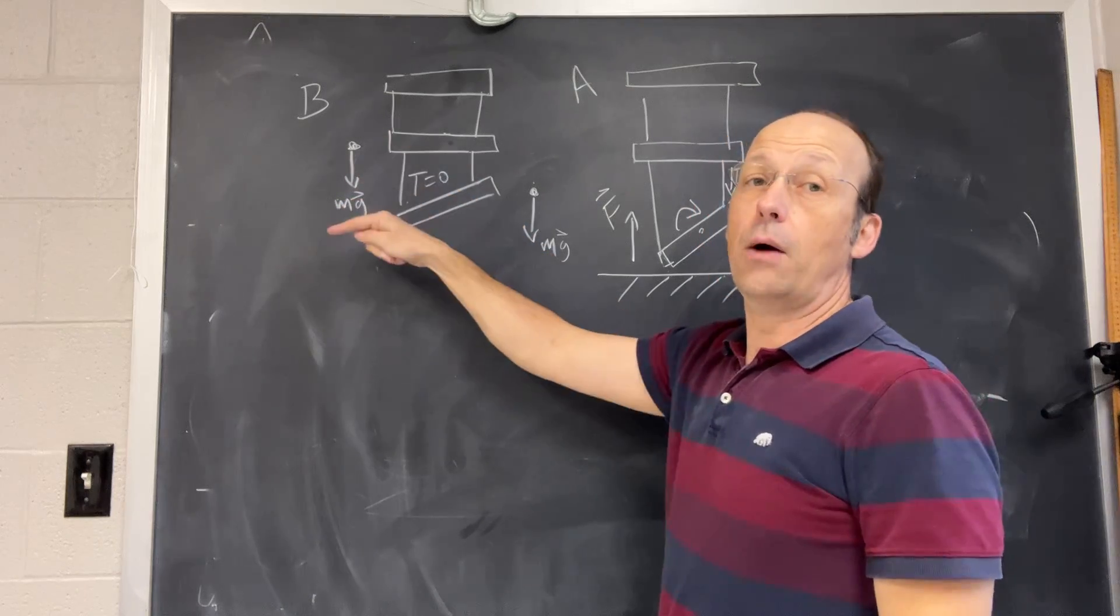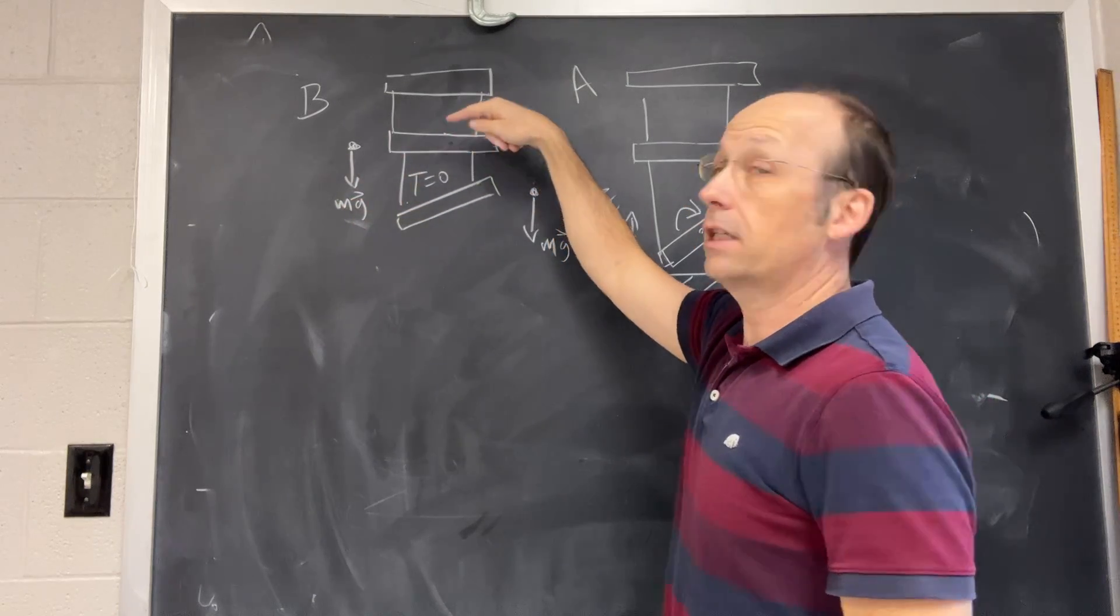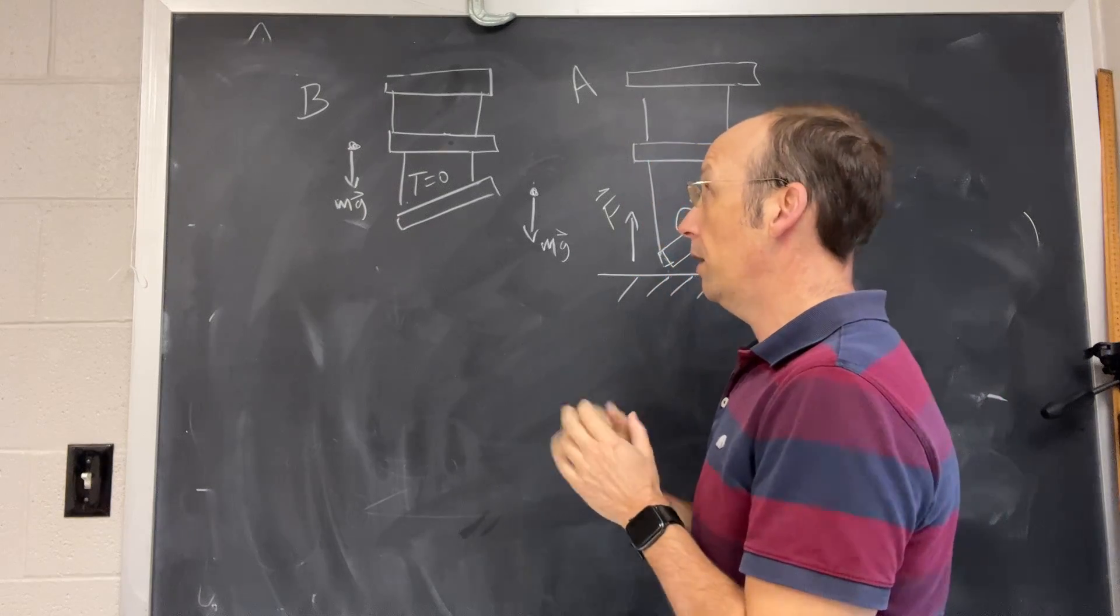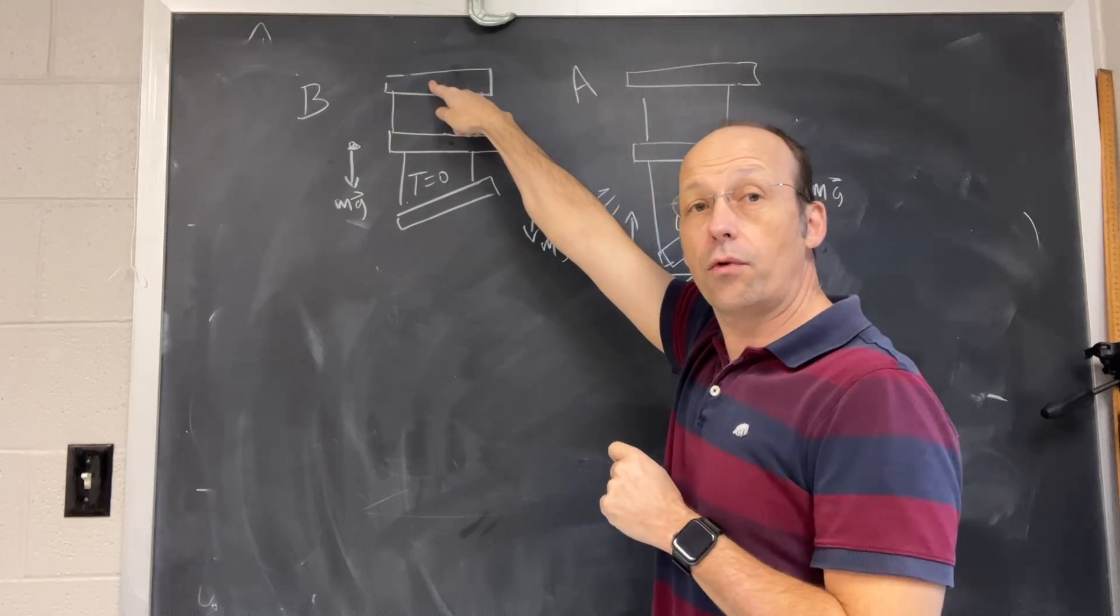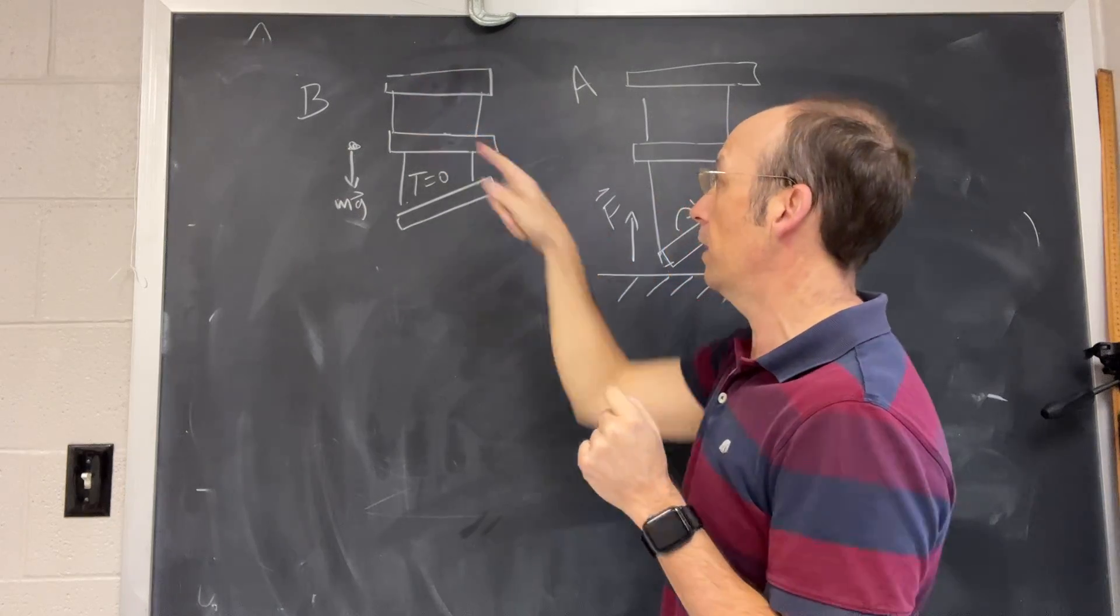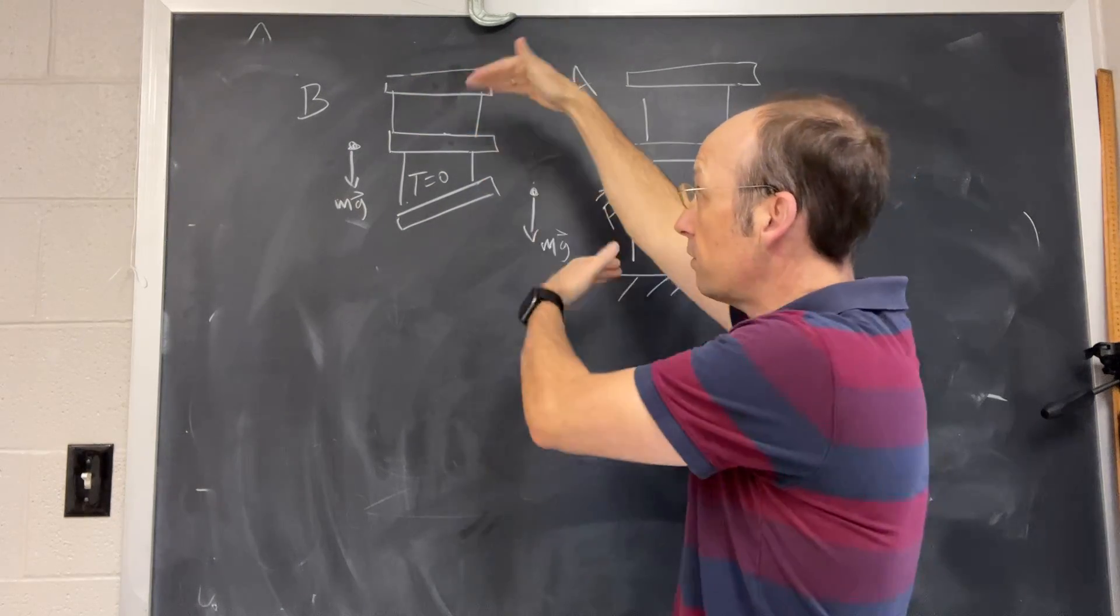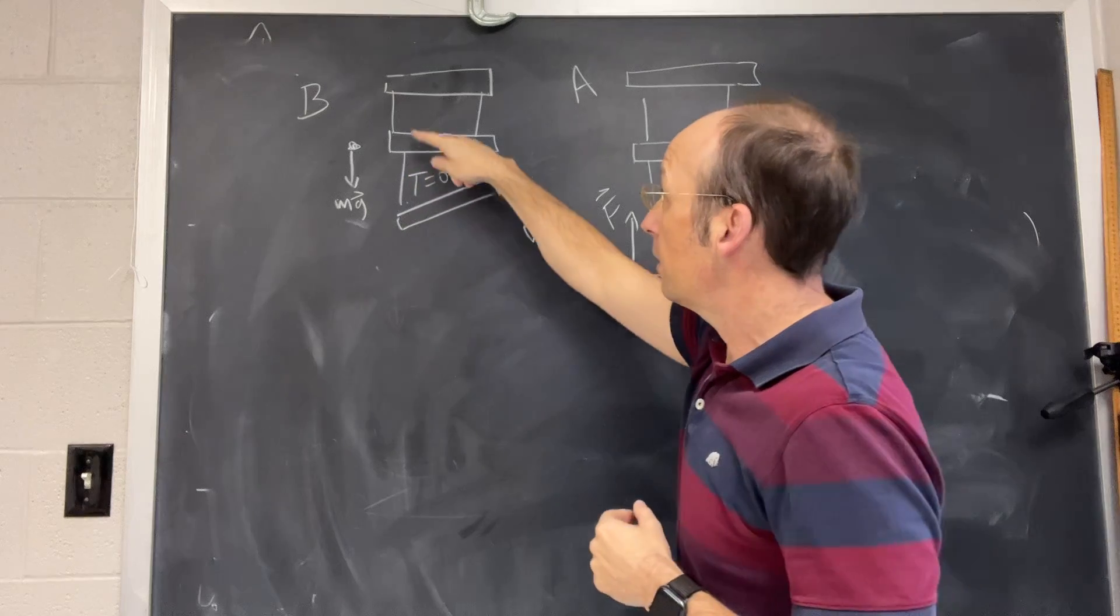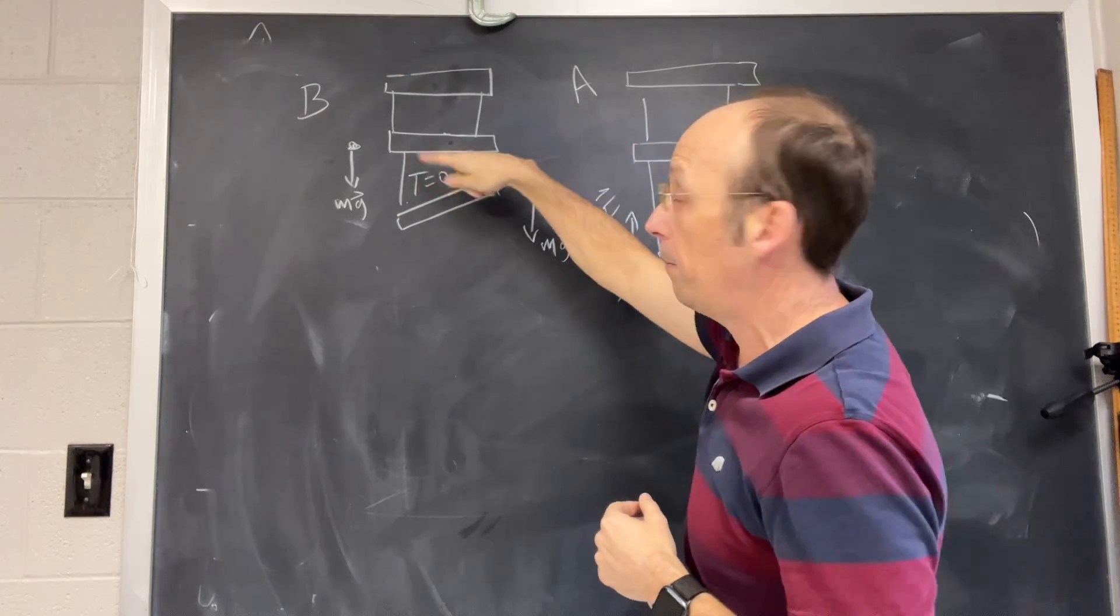Since there's a downward gravitational force, this will accelerate downward at negative 9.8 meters per second squared. This one also has a gravitational force and it also accelerates downward at negative 9.8 meters per second squared. So since they're all accelerating the same, there's no tension in these strings.